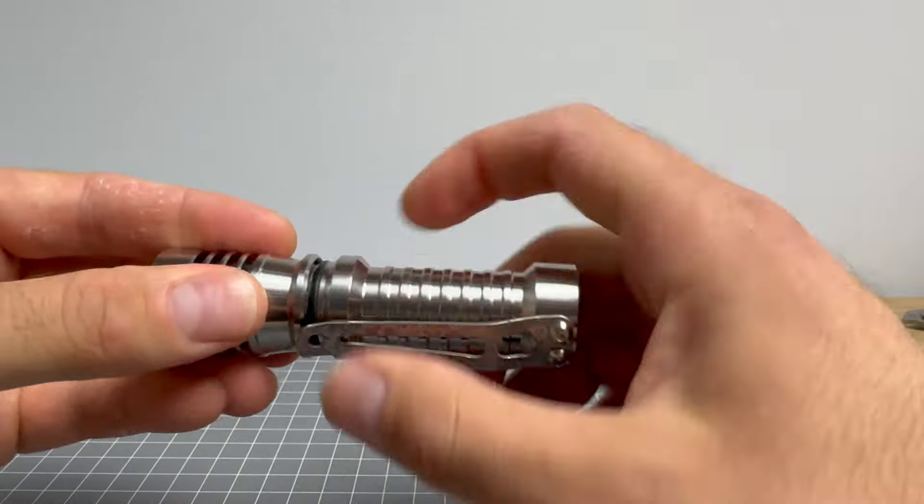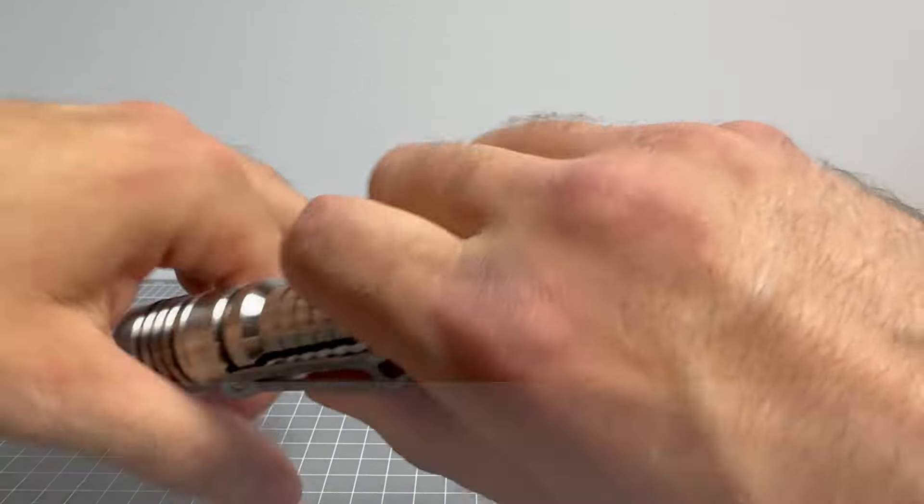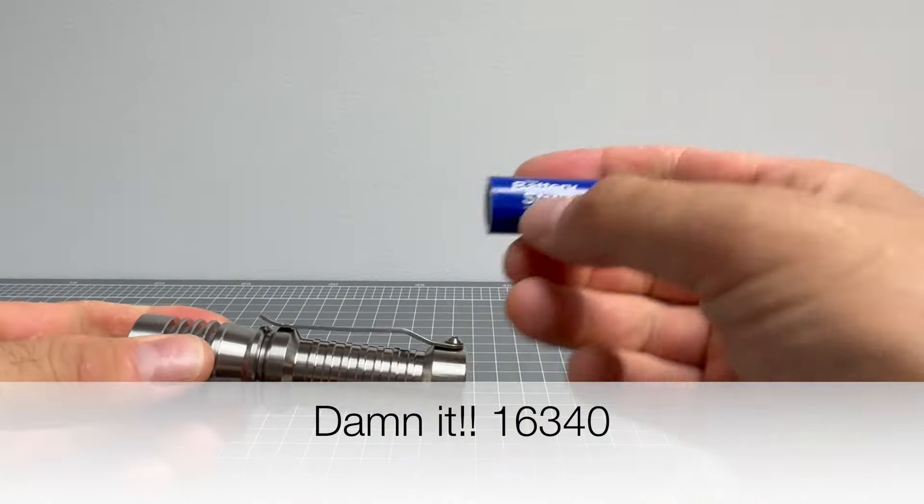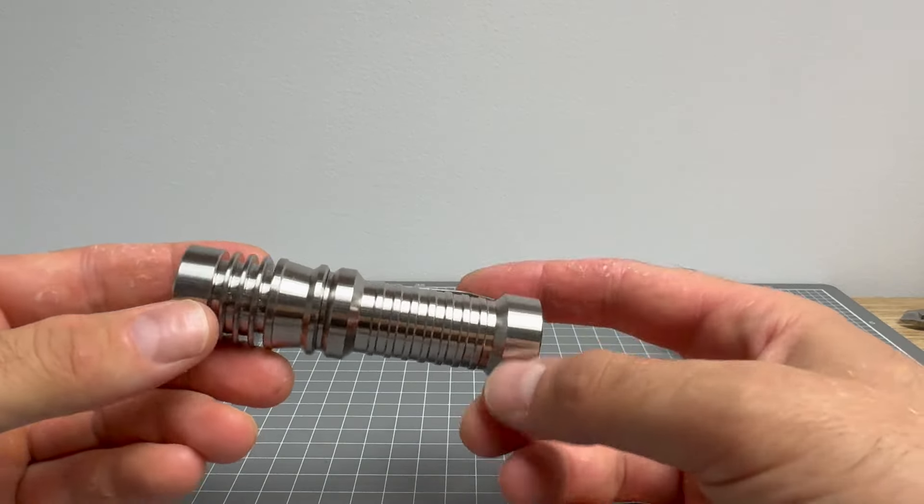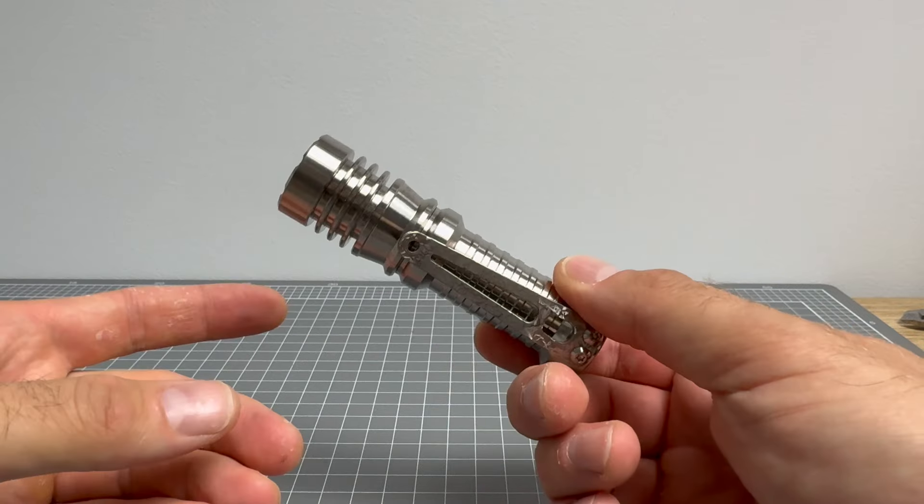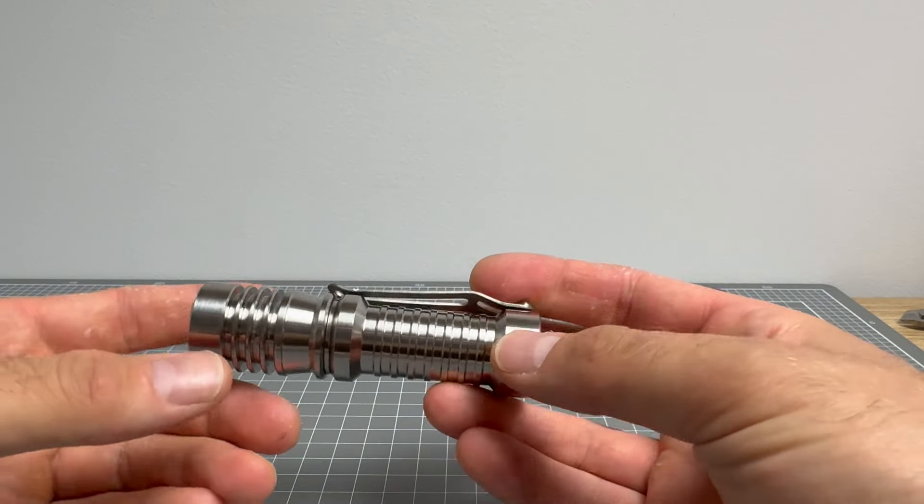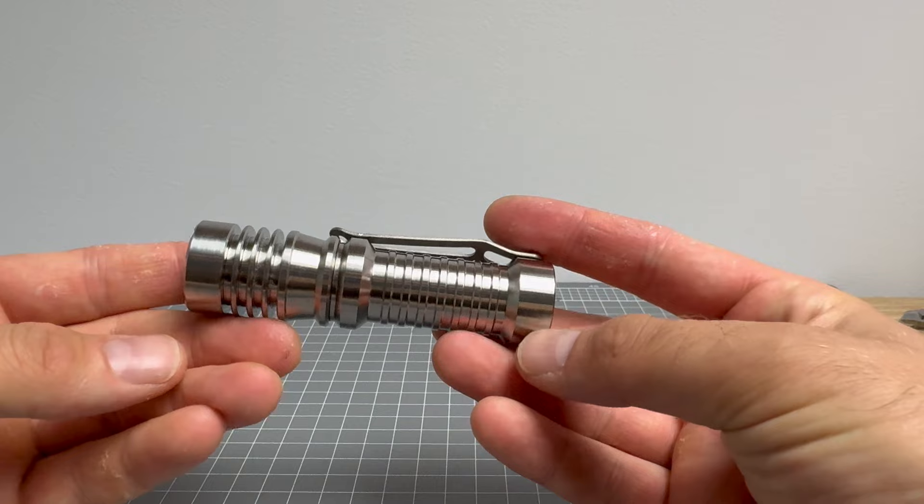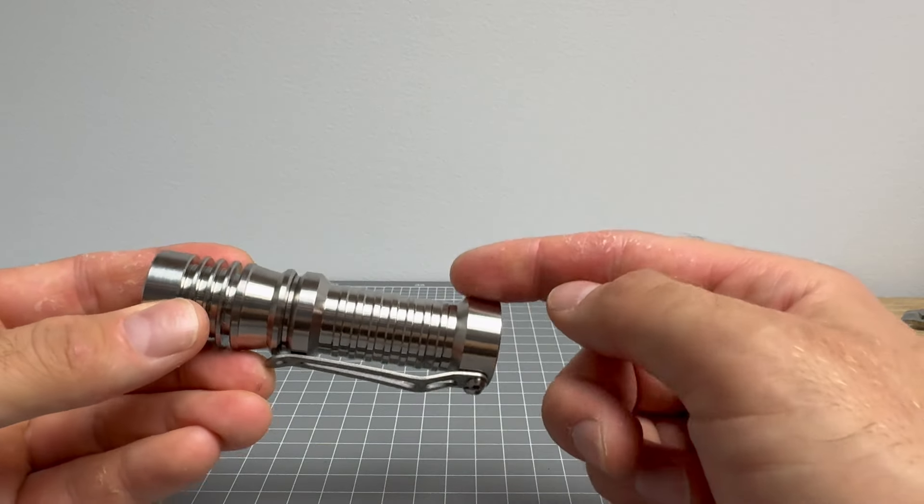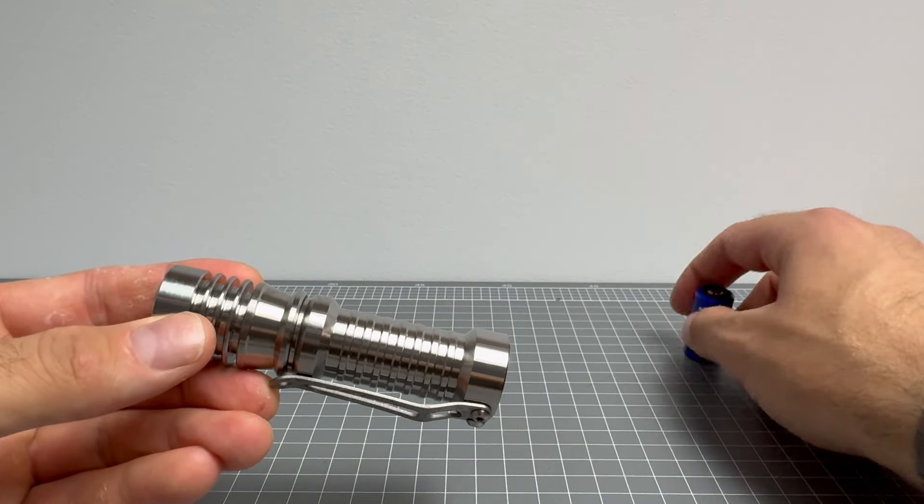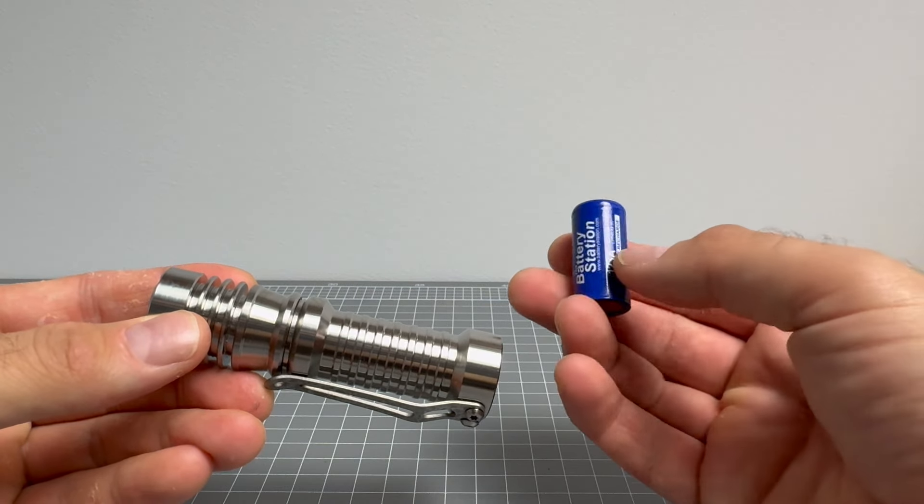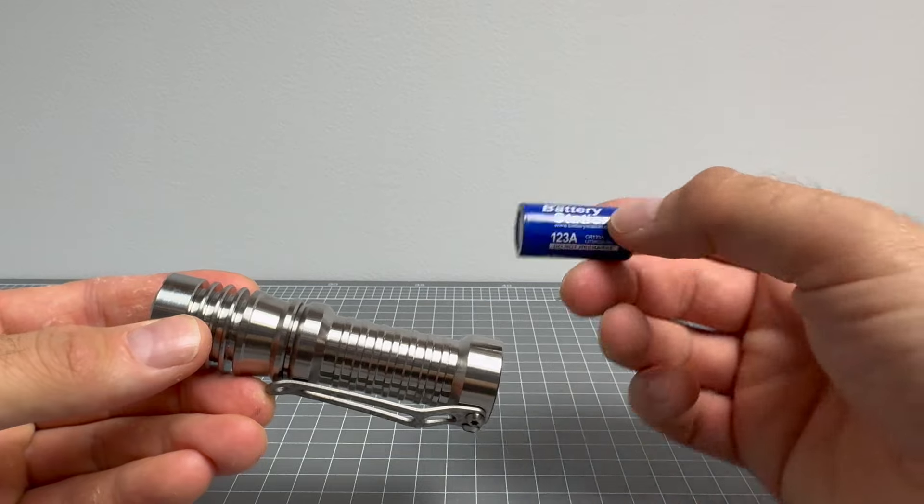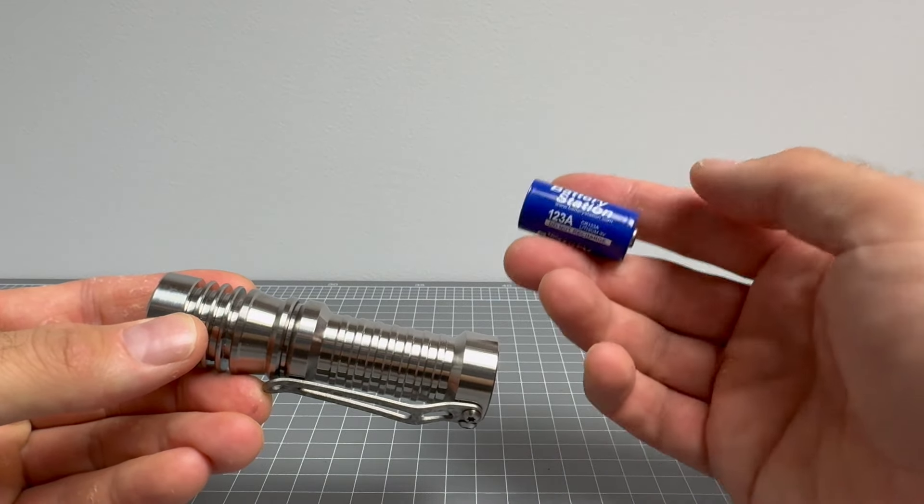So now this light takes a 16650 or a non-rechargeable CR123. And the best thing about that is you can have, you know, your rechargeables, which are great because they give a lot of output because it's 3.7 volts, but they don't give as much runtime. So if you want more runtime, chuck in one of these bad boys. And the other benefit, obviously, is that these guys have a 10-year shelf life. So you can buy a box.